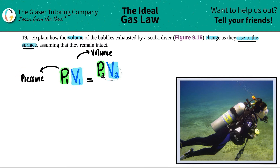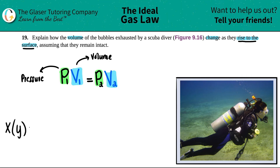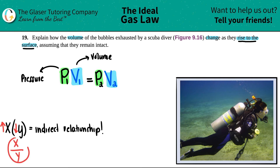Now we have to focus on these two variables: are they in a direct or an indirect relationship? If two variables are multiplied by each other and both appear in the numerator — or both in the denominator — that is an indirect relationship. An indirect relationship means if one increases, the other must decrease, and vice versa. Here P and V are both in the numerator, so this is an indirect relationship.